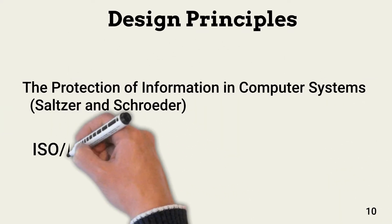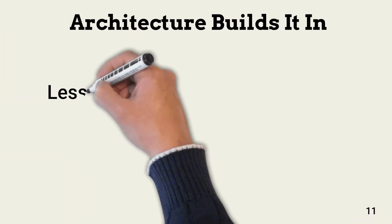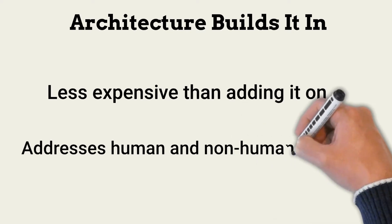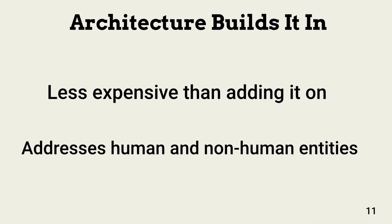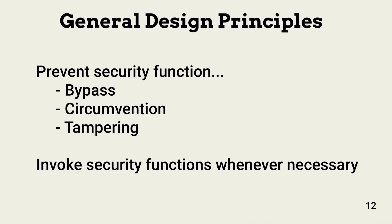Before starting network design, it's important to select a set of design principles. Two popular principles are the protection of information in computer systems and the ISO-IEC technical standard 19249. Building security into a system instead of adding it later is less expensive and enables security between system components. Security isn't just about keeping people honest; it's also about controlling what internal and external non-human entities can access. The two overriding principles frameworks detail are: first, security functions must be implemented in a way that prevents bypass, circumvention, or tampering; and second, security functions must be initiated whenever necessary to enforce one or more security requirements.